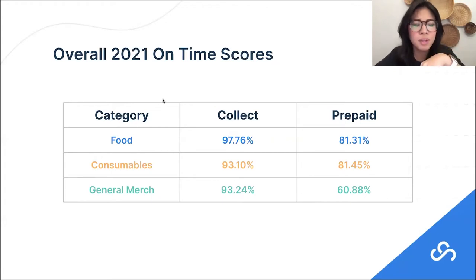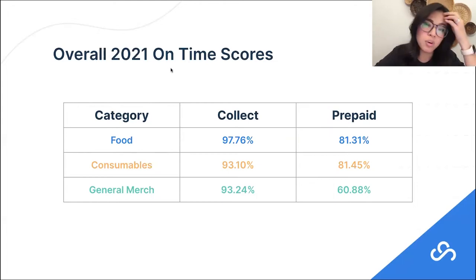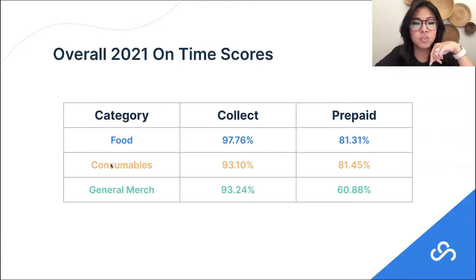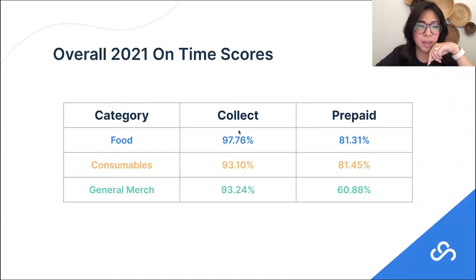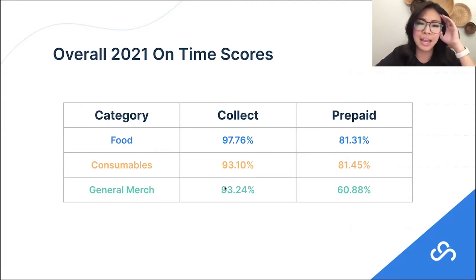Walmart evaluates their scores by on-time and in-full, so we broke that out as well. For fiscal year 2021 on-time scores, we broke it out into food, consumables, and general merchandise. For our collect suppliers, we saw very high scores — in the 90s. No one quite hit that 98% goal; food got close at 97.76%. By and large, everyone hit the high 90s or mid-to-high 90s if you are a collect supplier.